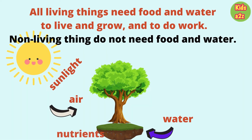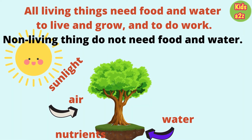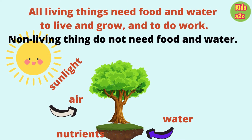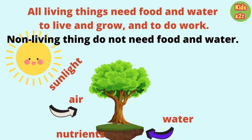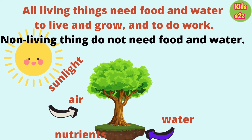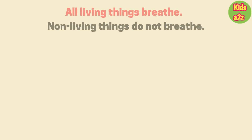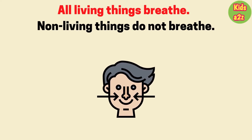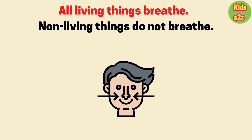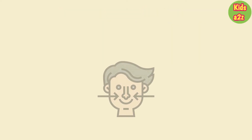Plants do not eat food the way humans and animals do. They make their own food using sunlight, air, water and nutrients from the soil. All living things breathe. Non-living things do not breathe. We need air to breathe. We breathe through our nose. But all living things do not breathe through their nose.